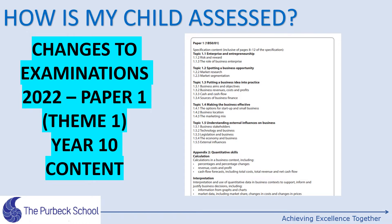So if we take topic 1.1 for example — enterprise and entrepreneurship — students must know about risk and reward and also the role of business enterprise. At the bottom you will note there's appendix 2, quantitative skills. In terms of calculations, students need to be able to calculate percentages and percentage changes, revenue, costs and profits, and understand formulas. Being able to calculate those aspects is really key, as well as looking at cash flow forecasts.